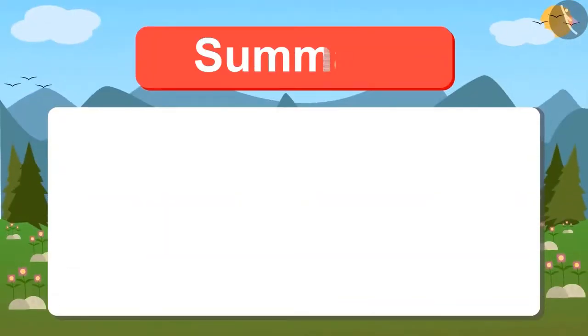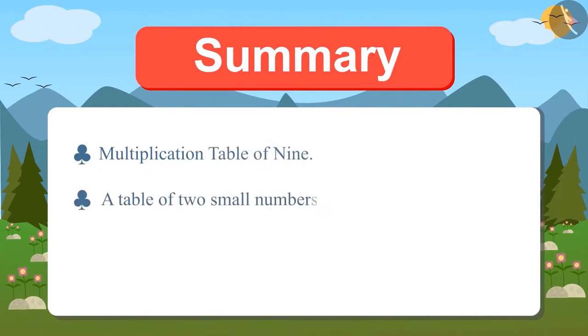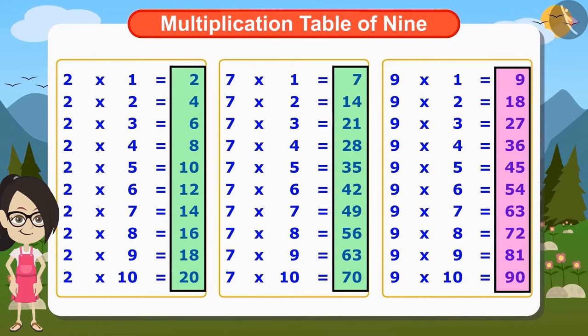Today we learned the multiplication table of 9, and together we also learned a table of 2 small numbers can be used to create the table of a large number. For example, Vandana used the tables of 2 and 7 to find the table of 9.